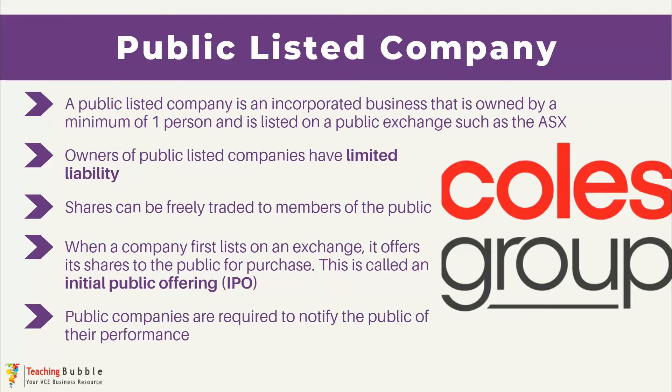Because the public can purchase shares at any time, there are really tough regulations. Companies are required to notify the public of their performance as well as anything that may impact their performance in the future, so that all investors are aware of how the company is performing. The Coles Group is shown here as an example of one of Australia's largest and well-known public listed companies.